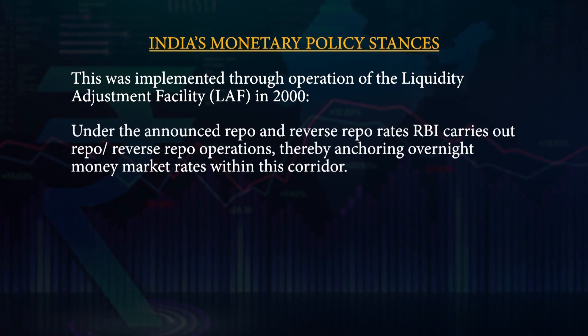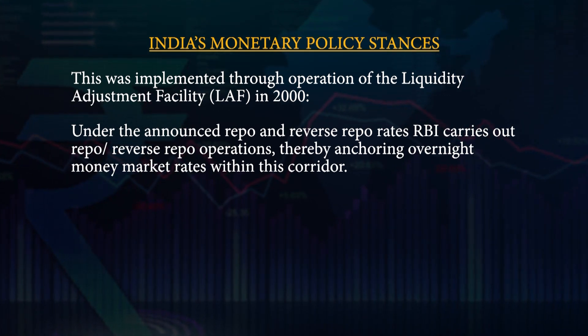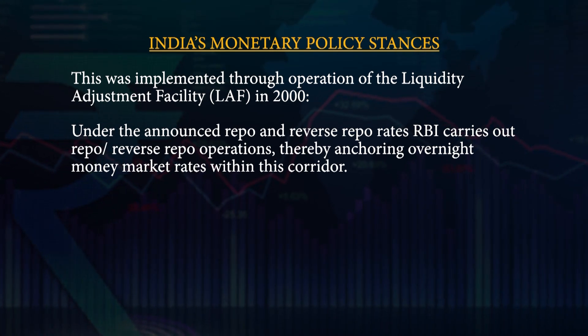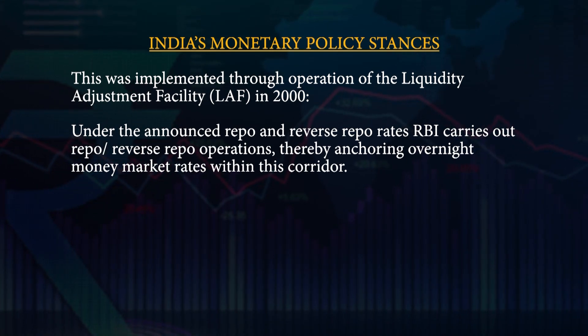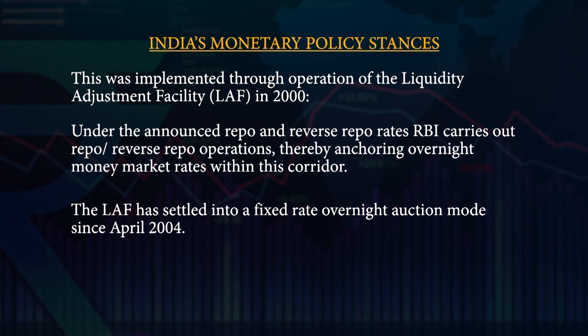Under the announced repo and reverse repo rates, RBI carried out the repo or reverse repo operations, thereby anchoring overnight money market rates within this corridor. The LAF — the Liquidity Adjustment Facility — has settled into a fixed rate overnight auction mode since April 2004. The LAF operations continue to be supplemented by access to the RBI standing facilities, which are linked to the LAF repo rate, the export credit refinance to banks, and standing liquidity facility to the primary dealers.